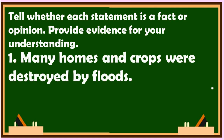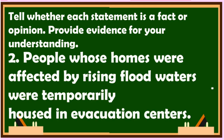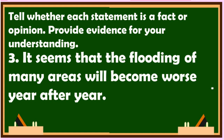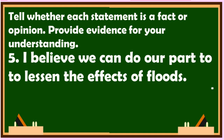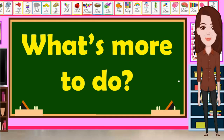Number one: Many homes and crops were destroyed by floods. Number two: People whose homes were affected by rising flood waters were temporarily housed in evacuation centers. Number three: It seems that the flooding of many areas will become worse year after year. Number four: Relief goods are part of the rescue operations to assist the victims of the calamities. Number five: I believe we can do our part to lessen the effects of floods.